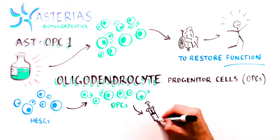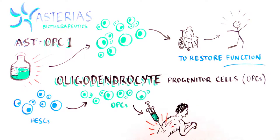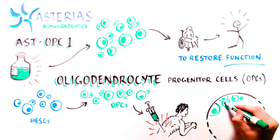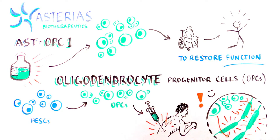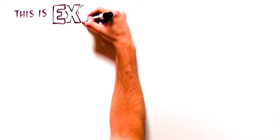The stem cell-derived OPCs are introduced directly into the spinal cord at the site of the injury, where they can help repair damaged nerves and can produce more myelin in the spinal cord.